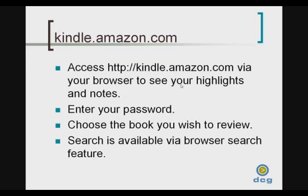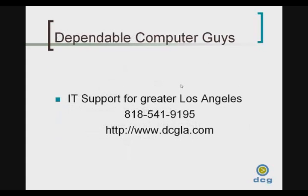Just to review: you access kindle.amazon.com via your browser so that you can see your highlights and your notes. You'll need to enter your password that you'd normally use for your Amazon account, and then finally choose the book that you want to check the annotations on. You can full-text search those annotations by using the Control-F feature on your browser.